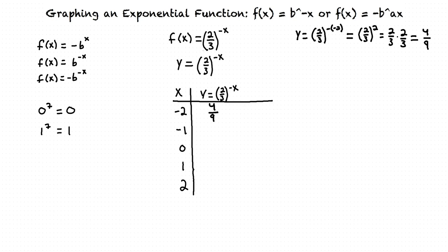Let's find y when x equals negative 1. Following the same procedure as before, we can see that 2 thirds to the negative negative 1 equals 2 thirds to the 1, which just equals 2 thirds, and this is the y value associated with x equals negative 1.